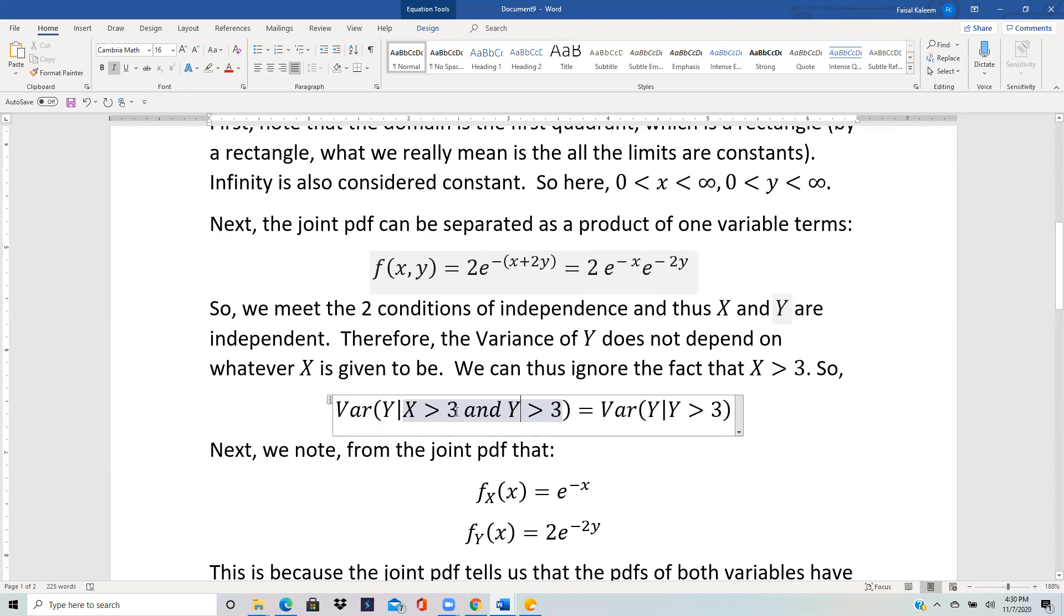You can completely ignore the x now once you have established the independence. So we are just reduced to finding variance of y given y greater than 3. Next you note from the joint pdf that in case of independent situation it ends up being product of the pdf of one variable times the pdf of the other variable. So pdf of x has to be e^(-x) and of y has to be 2e^(-2y).